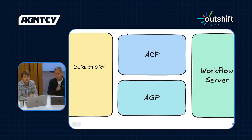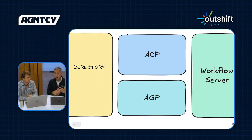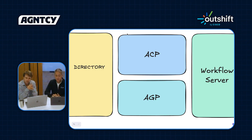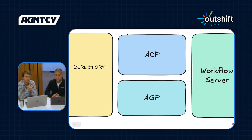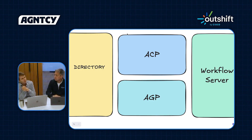Once you start building agent systems, you've got the names, the description, and you've got them in a directory — you're going to need a way to have them communicate. There are two ways we're working on. One is Agent Connect Protocol. The other is the Agent Gateway Protocol. ACP is our specification for how agents will collaborate, released as a set of REST endpoints.